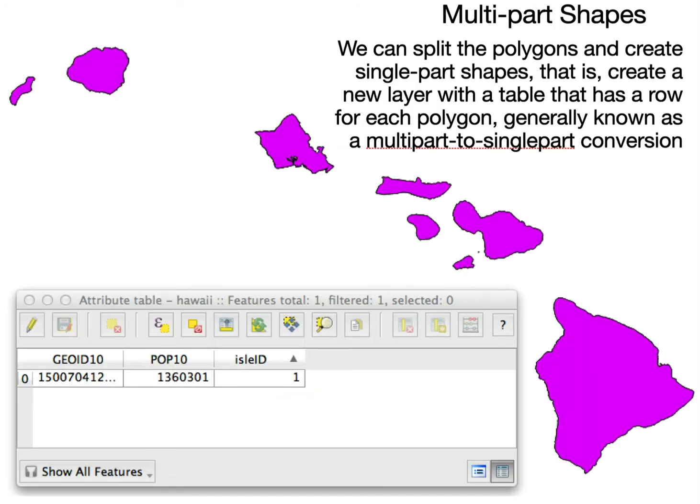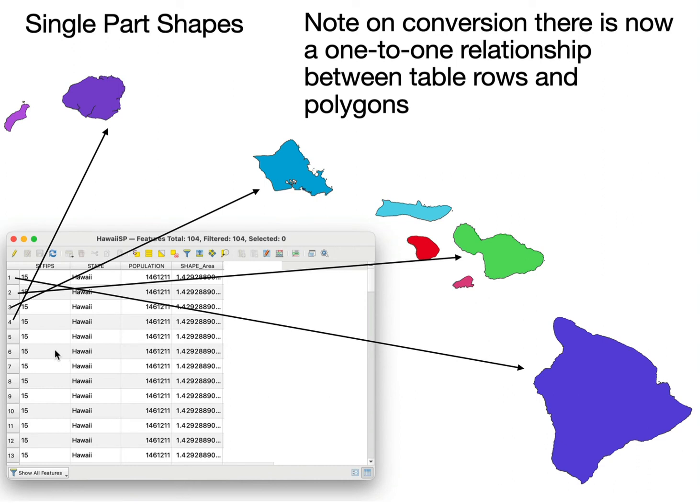It's fine as long as we recognize that we can convert multi-part to single-part. We may want to pull out pieces for an analysis or look at things individually. Note that when we do multi-part to single-part conversion, we create a one-to-one relationship between rows and polygons. So we went from one row to actually 104 rows here because of all the small islands.